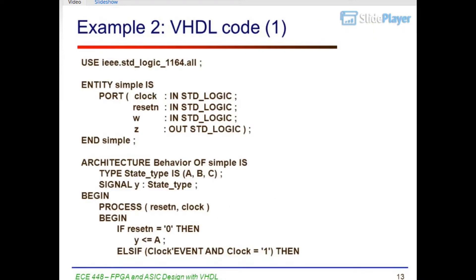Example 2 VHDL code, part 1: library IEEE; use IEEE.STD_LOGIC_1164.ALL. Entity simple is port: clock, in STD_LOGIC; reset, in STD_LOGIC; w, in STD_LOGIC; z, out STD_LOGIC; end simple. Architecture behavior of simple is.